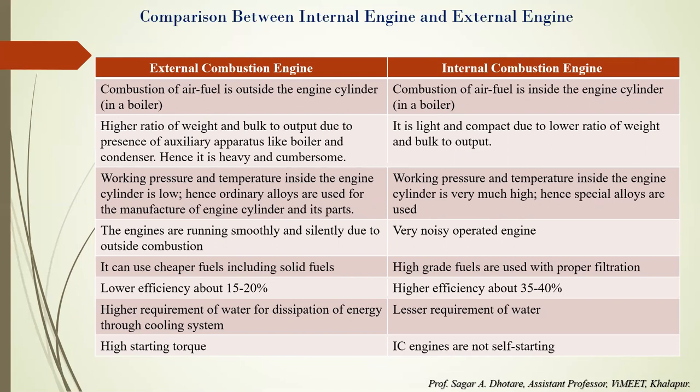In external combustion engines, there is a high ratio of weight and bulk to output due to auxiliary apparatus like boilers and condensers, making them heavy and cumbersome. Internal combustion engines are light in weight and compact due to a low ratio of weight and bulk to output. In external combustion engines, the working pressure and temperature inside the cylinder is low, so ordinary alloys can be used.